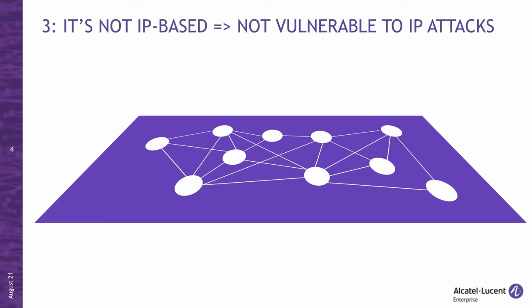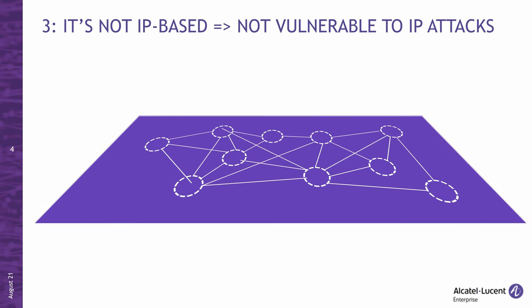To be 100% precise, SPB core nodes do have IP addresses for management purposes, but those addresses are isolated from user traffic and not in line with it. Those IP interfaces are not involved in user traffic forwarding in any way. So, since these nodes do not have IP addresses in the data plane, they are essentially invisible to any network scanning, discovery, or hacking tools which use IP.